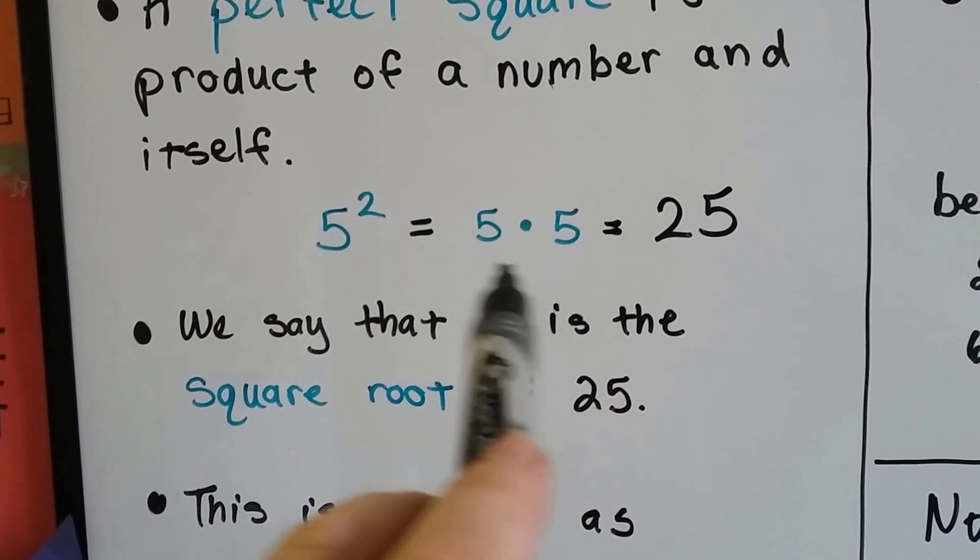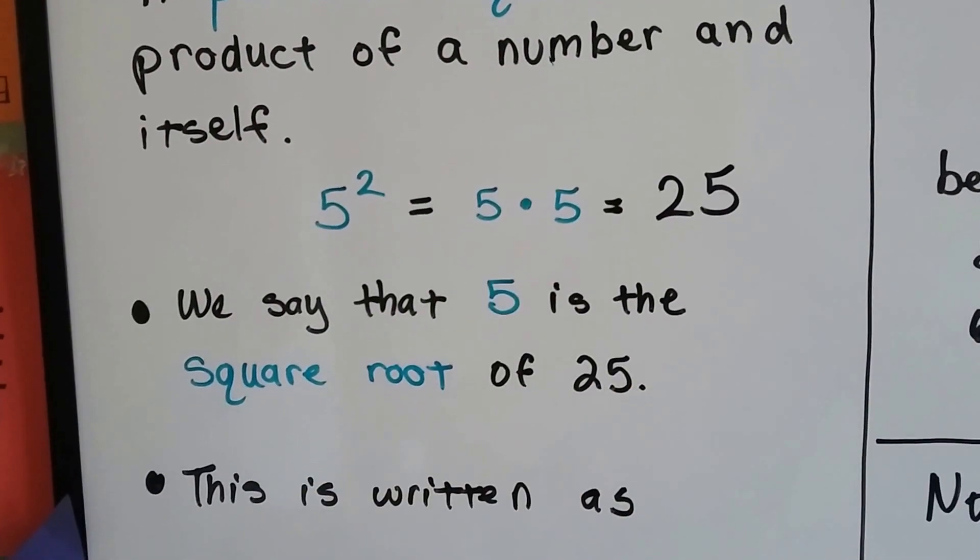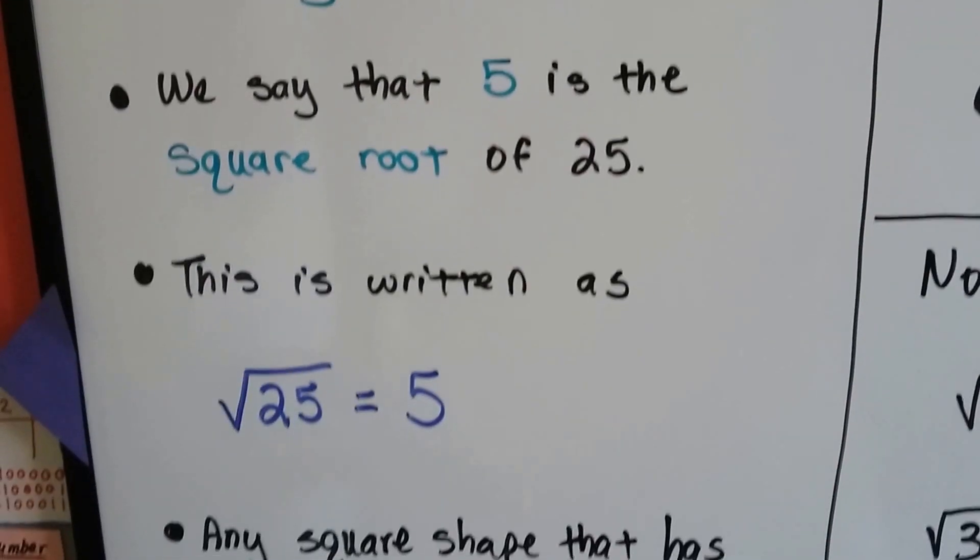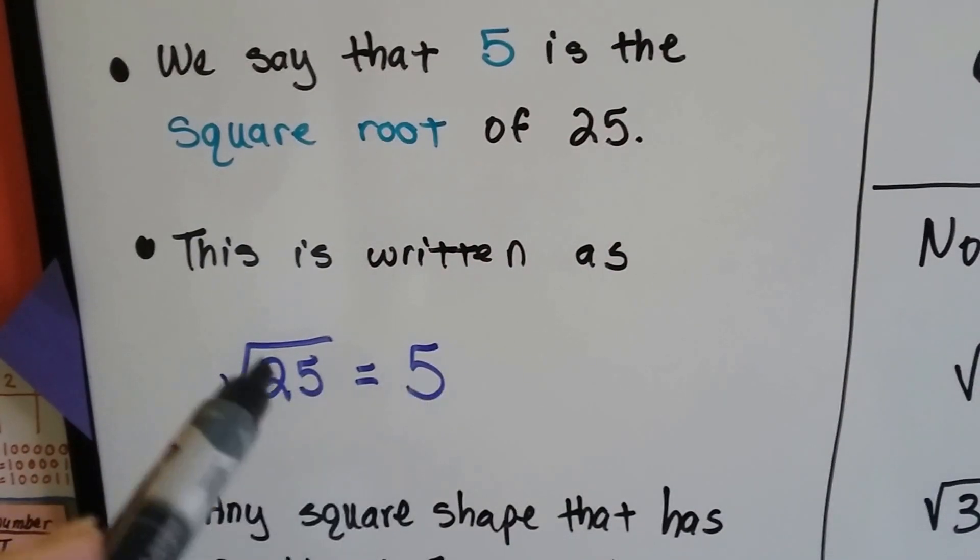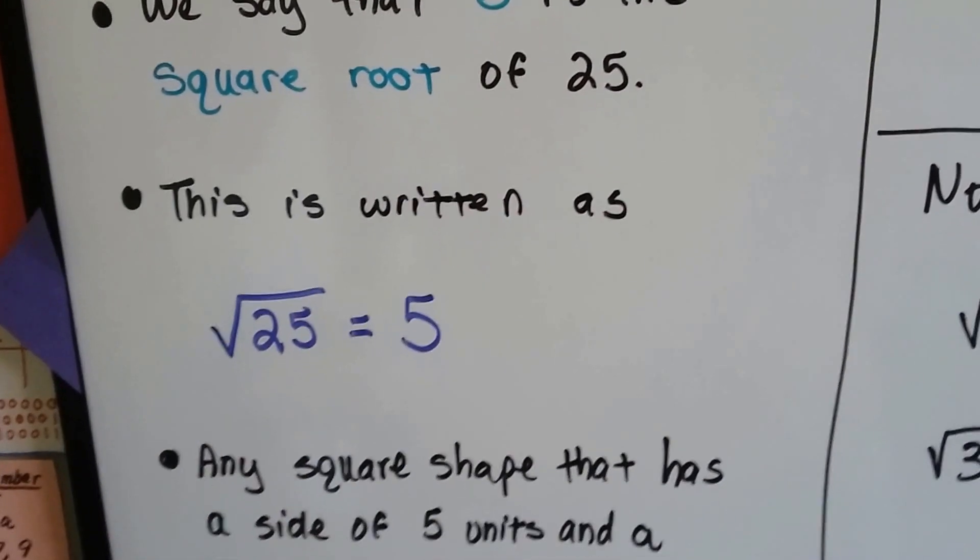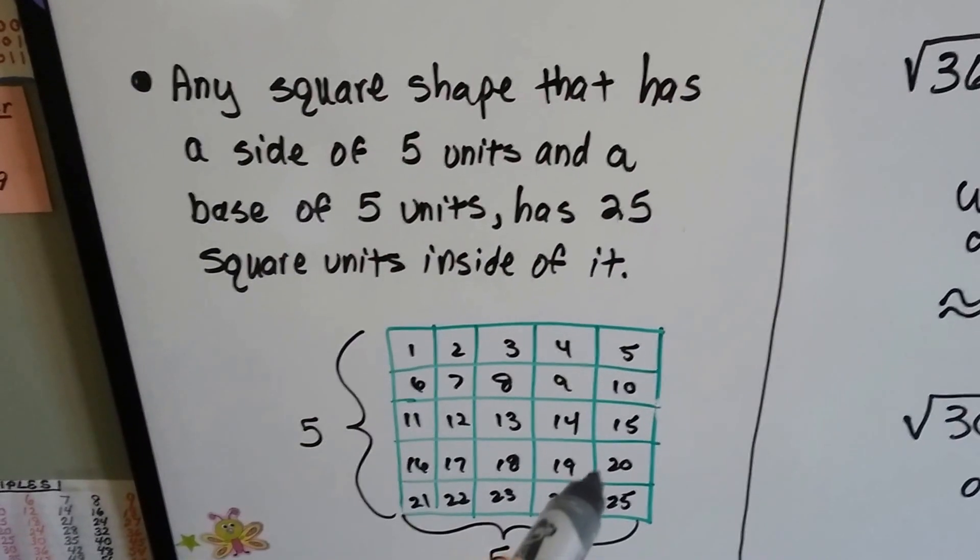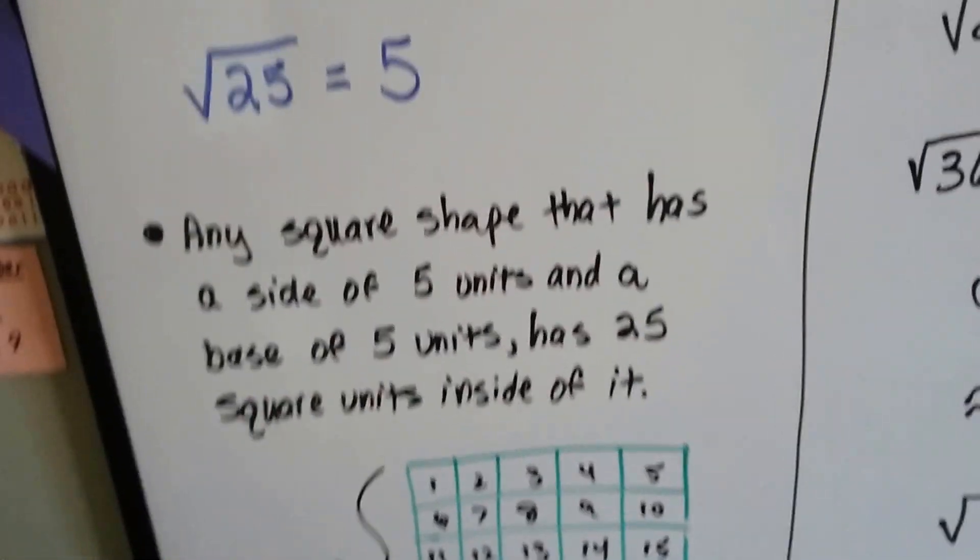It's using 5's and they're whole numbers. We say that 5 is the square root of 25 and it's written as 25 inside of a radical sign. The square root of 25 is 5. So any square shape that has a side of 5 units and a base of 5 units has 25 squares inside of it.